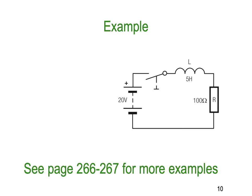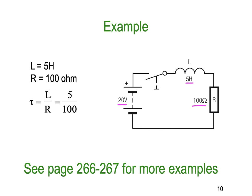Here's a little example — for more detail see your textbook pages 266 to 267. We have a 5 henry inductor in series with 100 ohms and 20 volts. So L is 5 henrys and R is 100 ohms. Our time constant tau equals L divided by R: 5 divided by 100, which is 0.05 seconds or 50 milliseconds — very, very quick.